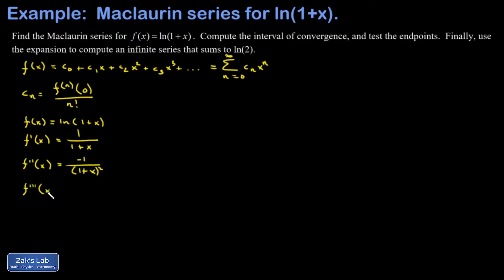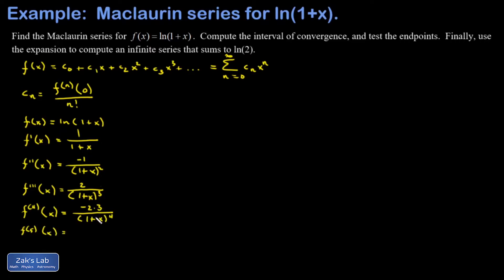For the third derivative, I use the same idea — I view this as negative 1 plus x to the negative 2, bring down the exponent, and it gives me a positive 2 over 1 plus x to the third power. I left the 3 and the 2 separate because I'm trying to recognize the pattern. And in my fifth derivative, I end up with a positive 2 times 3 times 4, all divided by 1 plus x to the fifth. So that's probably enough to recognize any pattern that emerges here.